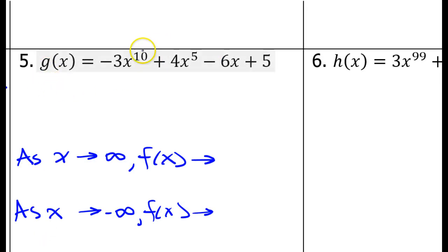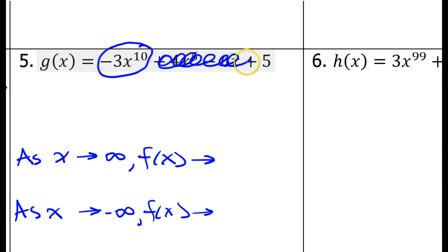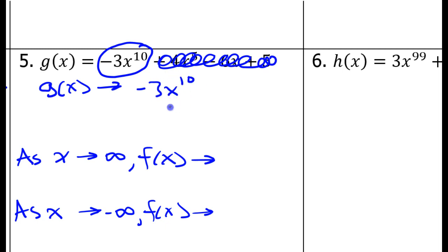Looking at number 5, we really will be focusing on the first term because it has the highest exponent. The size of this term in absolute value is going to increase so much faster than the others that the other terms will quickly become irrelevant. So whatever happens to this term, that's what the function is really approaching. So g of x will be approaching negative 3x to the tenth power. As x approaches positive infinity, this is going to be a really, really big number times negative 3, so this is going to be a very large negative number — that's negative infinity.